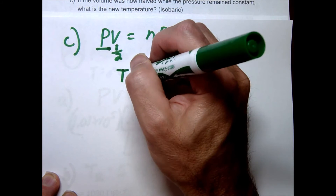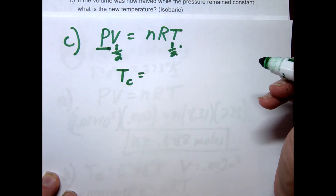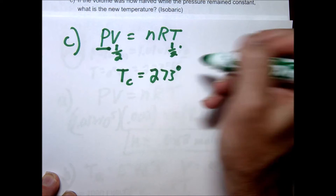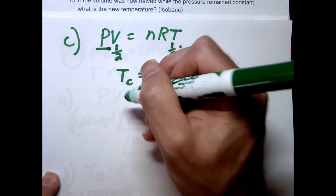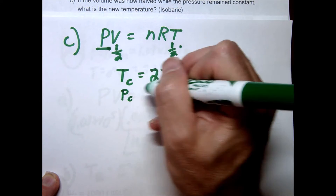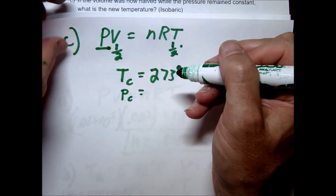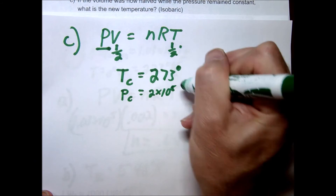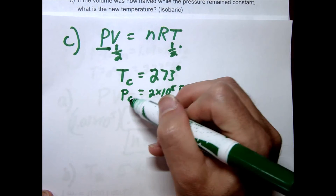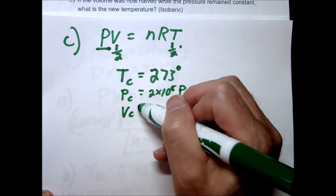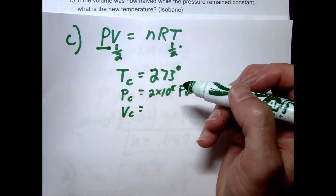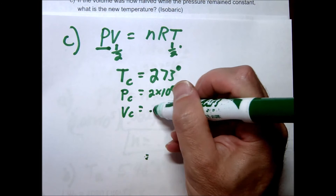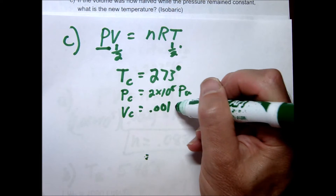So the new temperature at C goes back to 273 kelvins. The pressure at C is constant, which in the last step was 2 times 10 to the 5th pascals. The volume in C was cut in half, so that goes back to 0.001 meters cubed.